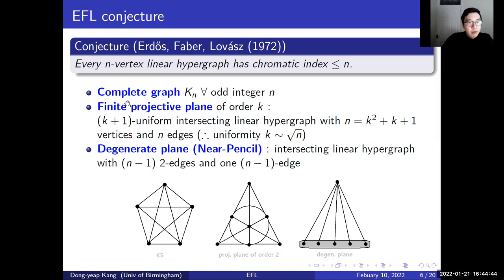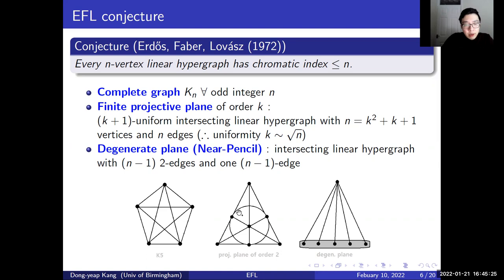The first example is a complete graph with n vertices where n is an odd integer. The second example is an intersecting finite projective plane of order k, which is an intersecting linear hypergraph with n vertices and n edges, where each edge contains exactly k+1 vertices and satisfies a certain formula. Here we have a projective plane of order 2, or the Fano plane, where each line represents an edge of this hypergraph, with 7 vertices and 7 lines corresponding to 7 edges respectively.